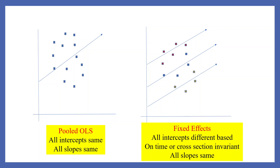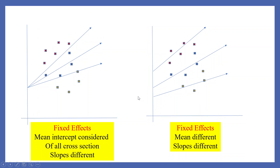Now let's talk about the fixed effects model. All intercepts are different, based on time or cross-sections — which are invariant — while all slopes are the same. In another variation, slopes are different across individuals. These are all fixed effects scenarios. So we go for panel data regression — either pooled OLS, fixed effects model, or random effects model — and we run tests to decide, which we have seen in my previous video.